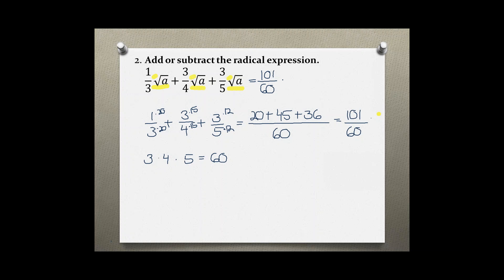And then the square root stays the same, so I have the square root of a, which definitely I cannot simplify. So 101 over 60 times the square root of a is my final answer for this question.